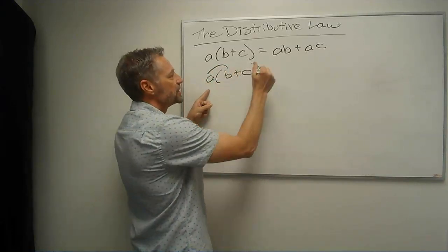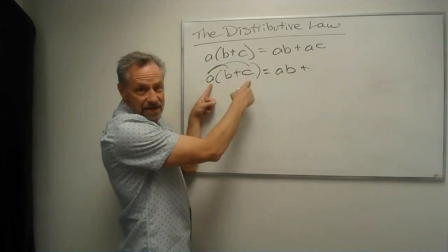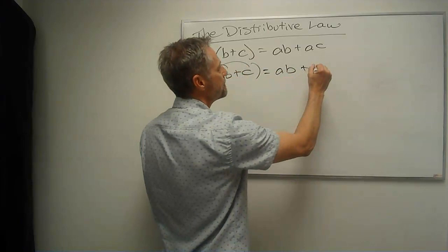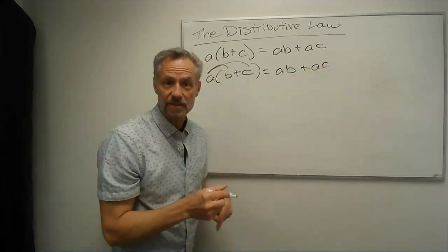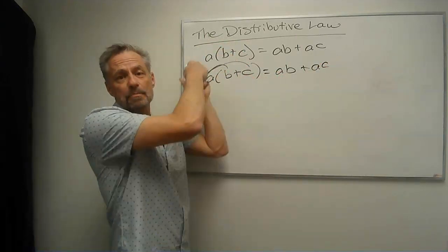It's A times B plus, and then we distribute the A to the C also, A plus C, or A times C rather. And that's the distributive law, that's what we might distribute, put it into each one.